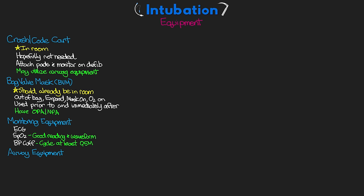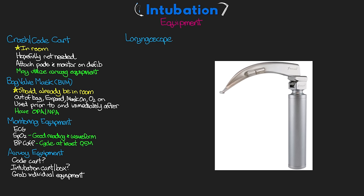When it comes to airway equipment, I've seen it done differently at different facilities. Some places use the crash cart for all the equipment, while others have an intubation cart or box, and others just grab what's needed at the time. Just make sure you have everything together that you're going to need. The laryngoscope is going to be the primary piece of equipment used to assist in the intubation — it lifts the tongue out of the way to better visualize the trachea and vocal cords.